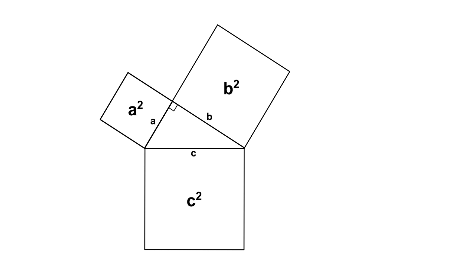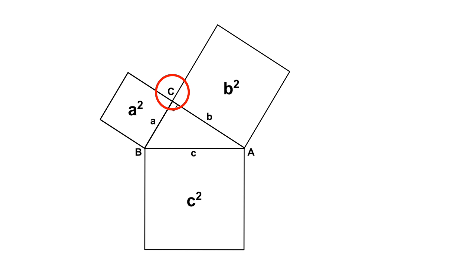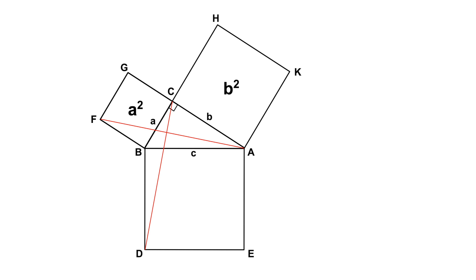I am also going to label the other vertices — that's the corners of the triangle — A, B, and C. We generally use capital letters for the vertices. Note that vertex A is opposite side a, vertex B is opposite side b, and vertex C is opposite side c. I am now going to label the remaining vertices, and add some lines that join some of the vertices. I will begin by joining A to F and C to D, and then draw a line from vertex C that is perpendicular, or at right angles, to the line AB and DE. Where the line cuts DE I will label L, and where it cuts AB I will label M.